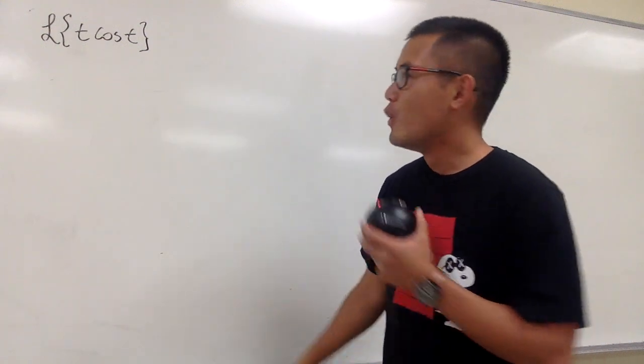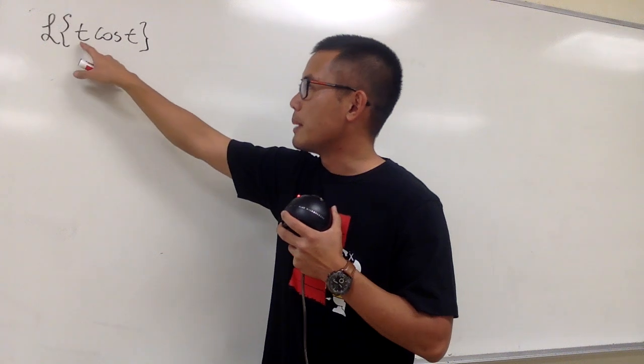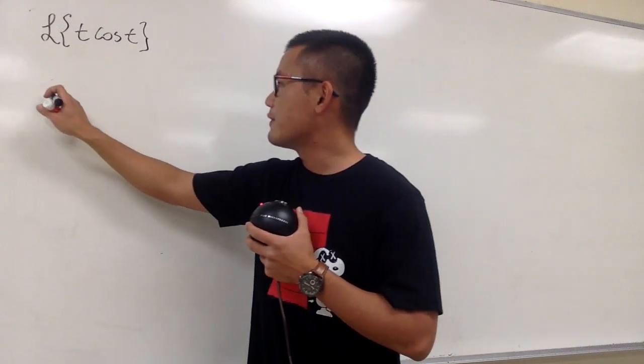So how can we do this? Well, we have t multiplied by cosine t. We have to remember the effect when we multiply by t with a function. So let me write this down first.